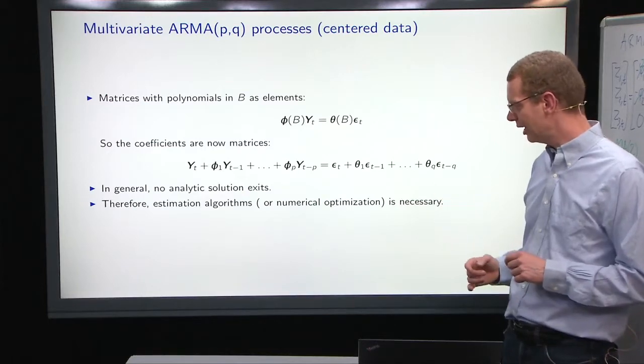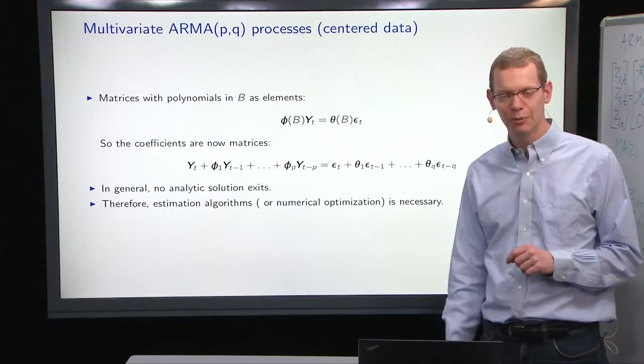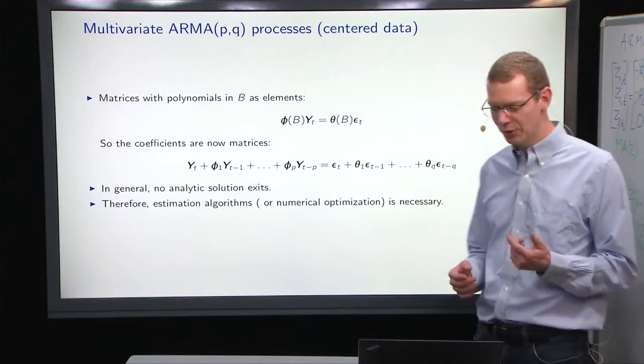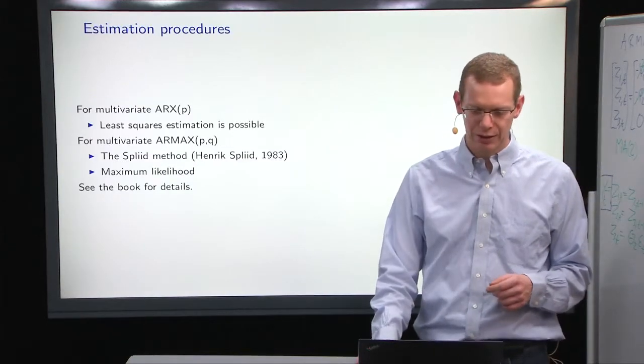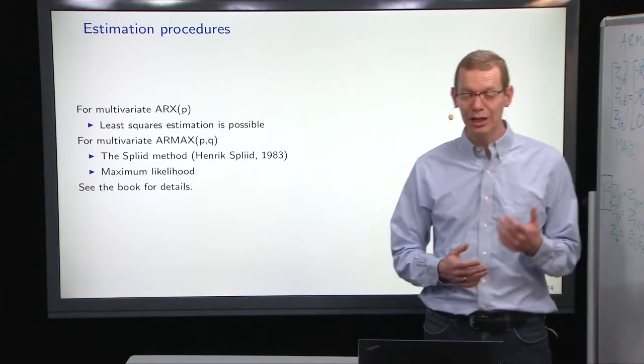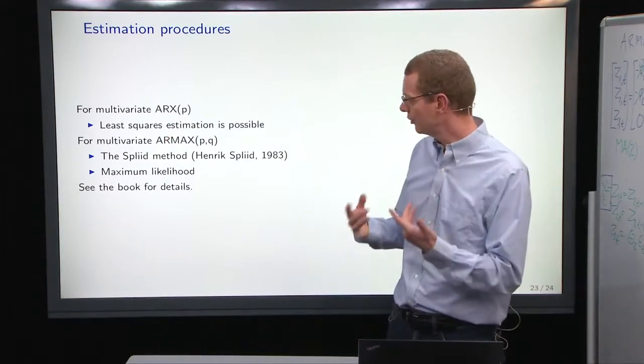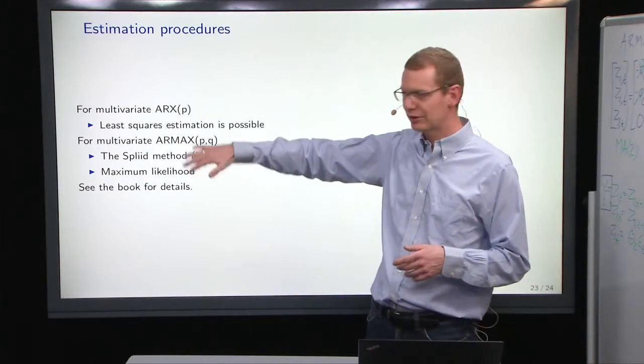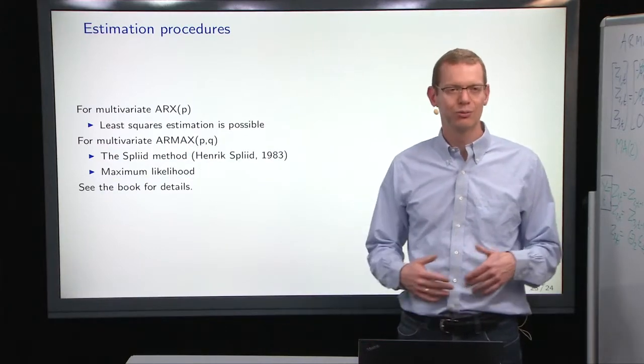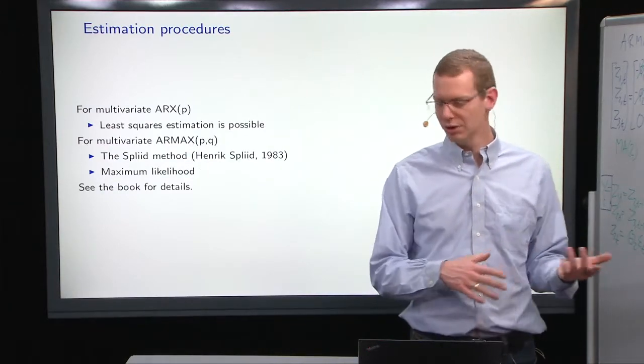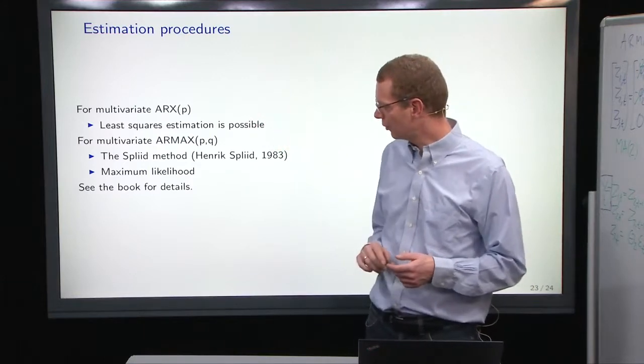So you're left with estimation algorithms, which in practice means numerical optimization almost always. How do you do that? Well, if you have a pure autoregressive model, also including exogenous input, then you can do least squares estimation. So you can do that instead of doing the Yule-Walker. You can go straight for least squares.